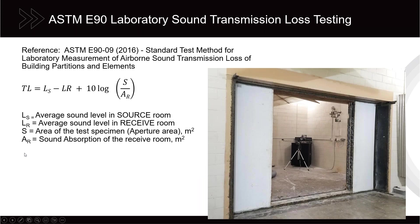For transmission loss testing, we follow ASTM E90. We basically have two reverberation chambers connected by an aperture. We measure the average sound level in the source room — averaged both over time and spatially using a rotating boom — minus the average in the receive room. The measurement includes a correction: 10 times the log of the area of the test sample divided by the units of sound absorption in the receive room. So sound transmission loss has a correction for both the size of the sample and the quantity of sound absorption in the receiver.